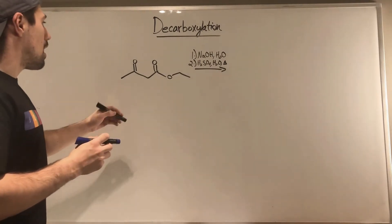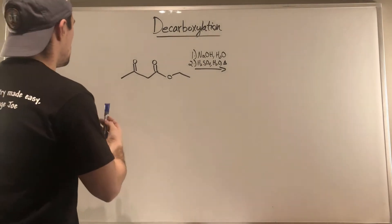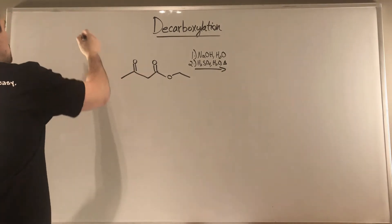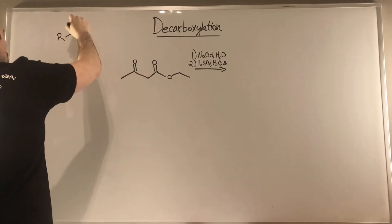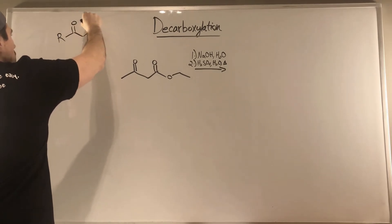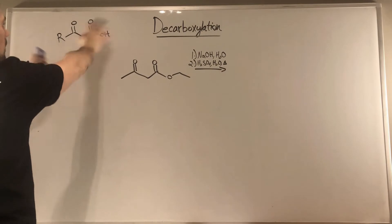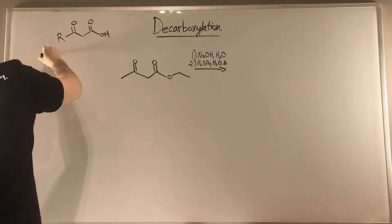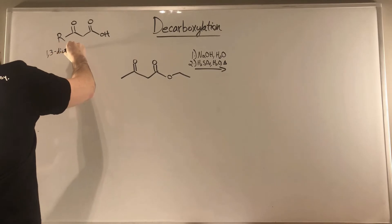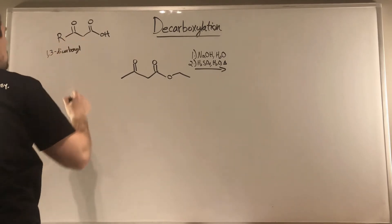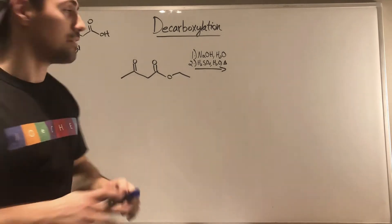This typically happens when you have the setup of an R-group with a carbonyl. So you've got to have a carboxylic acid and a 1,3-dicarbonyl. You're going to need some type of carbonyl presence and then a carboxylic acid terminating your chain.